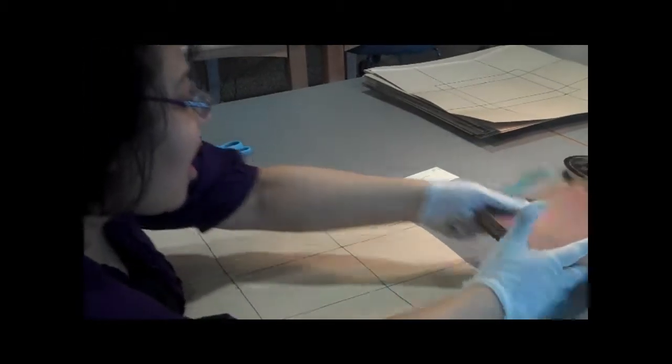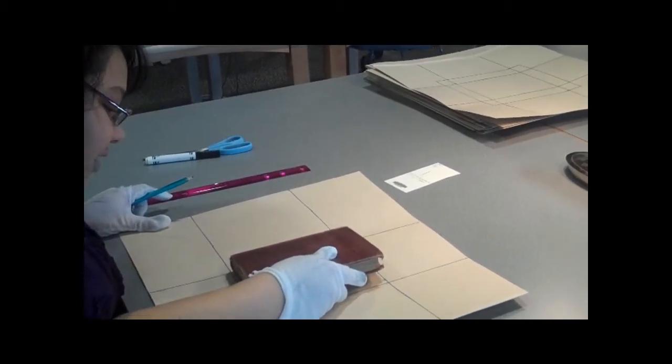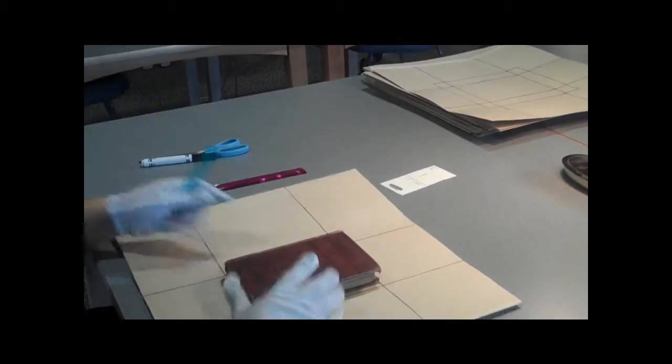So now what we're going to do is we're going to make the part of the enclosure that is going to cover the sides.